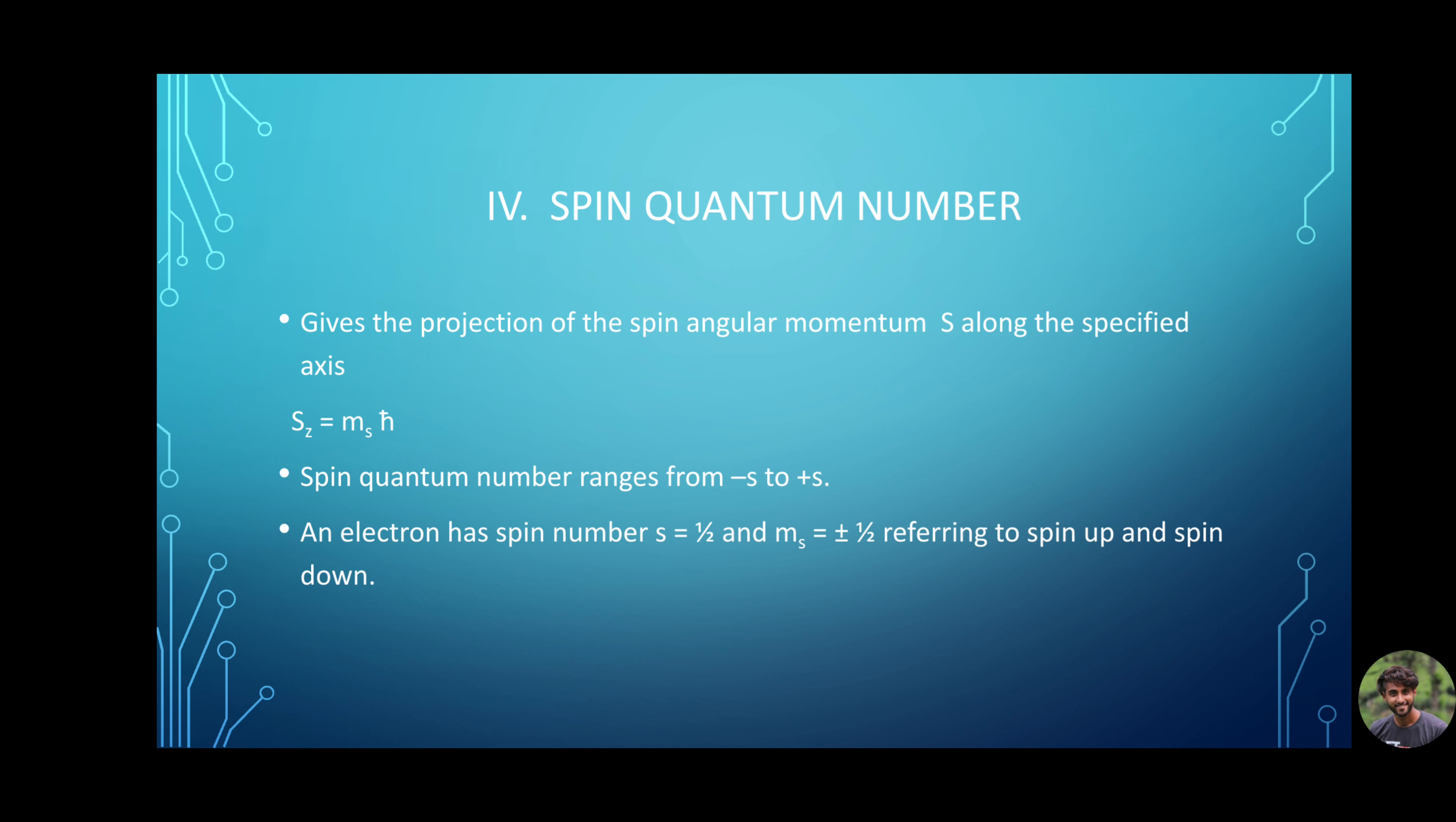Next, spin quantum number. Spin quantum number describes the spin of the electron within that orbital. It is an intrinsic angular momentum. It gives the projection of the spin angular momentum S along the specific axis. S_z = m_s ℏ. In general, the value of m_s ranges from -s to +s. An electron has spin number s = 1/2 and magnetic spin m_s = ±1/2, referring to spin up and spin down states.